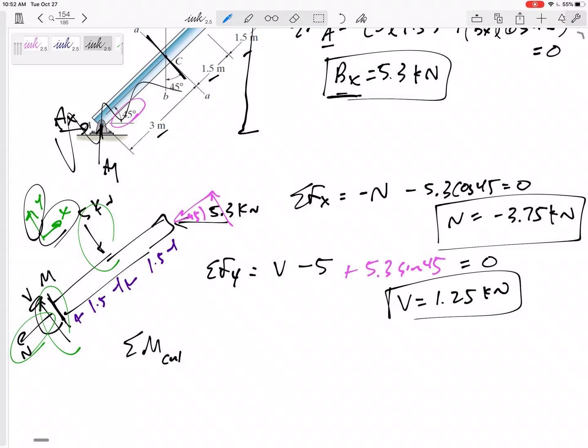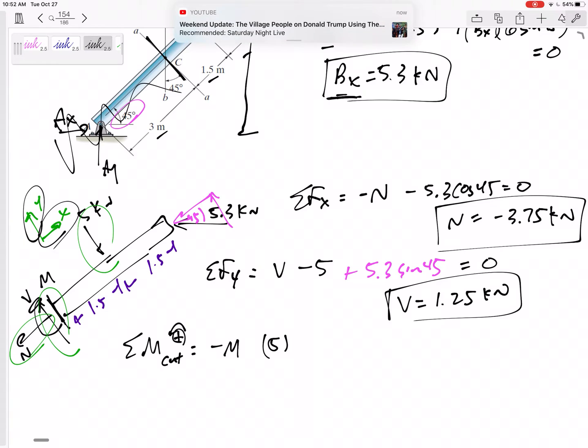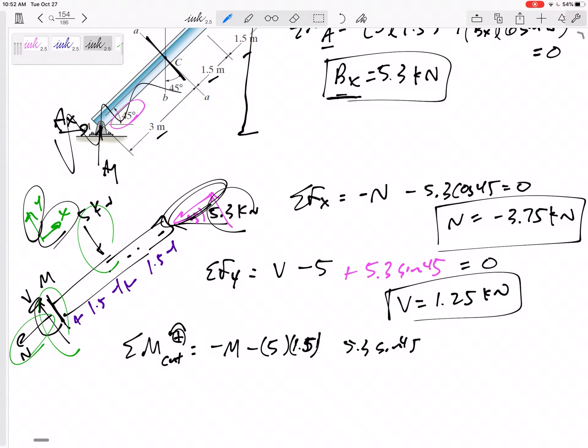And then summing the moments, I like summing the moments about the cut. N goes straight through it, V goes straight through it. I've got this I'm gonna choose counterclockwise as positive. So negative M. This 5 is acting 1.5 away, creating a also negative moment. And this component goes straight through the cut, but this component the 5.3 sine 45 is acting 3 meters away creating a positive moment. Set that equal to 0, I'll get M is negative 3.75 kilonewton meters.